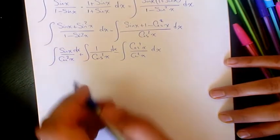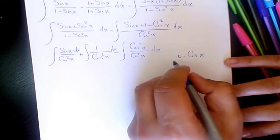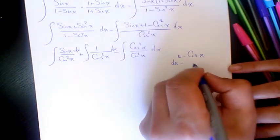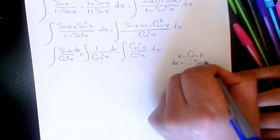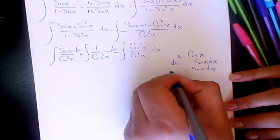Now if I consider u as cosine x, du will be negative sine x dx, or sine x dx will be negative du.